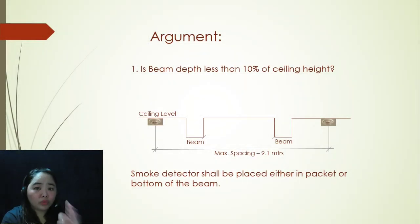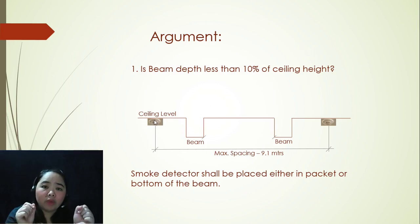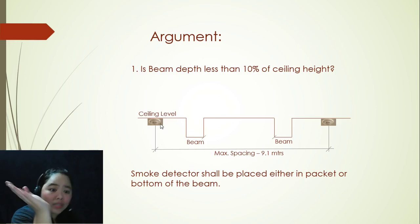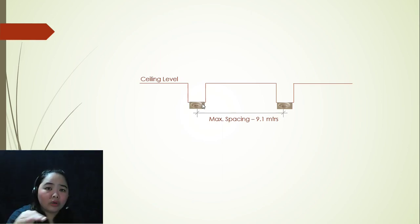So now that we know the three rules, we are going to be discussing the argument. Is beam depth less than 10% of ceiling height? If that's the case, smoke detector shall be placed either in pocket or bottom of the beam. So, look at the slide over here. You will see here that this is our underside ceiling. And remember that the maximum spacing is 9.1 meters. The smoke detector is located on the ceiling underside, and then this one is located at the bottom of or under the bottom of the beam, which is still following the 9.1 meter spacing.